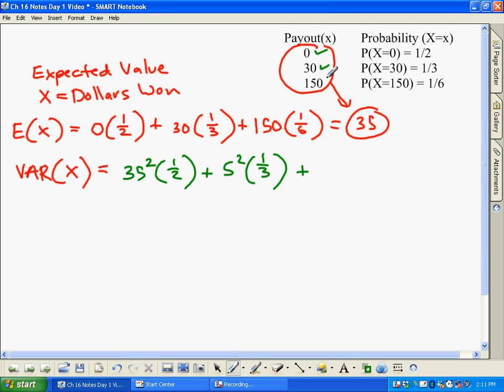And then finally the last one is 150, so what's the difference between 150 and 35? Well if you take 150, you subtract 35, you would get 115, and you square it, multiply by its probability.